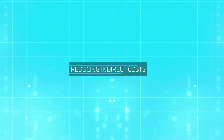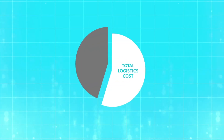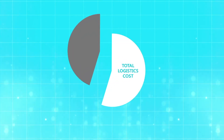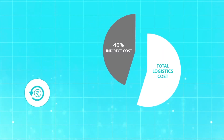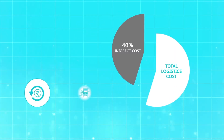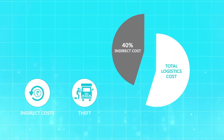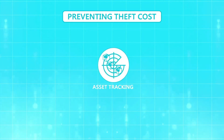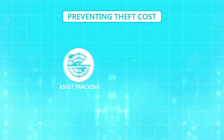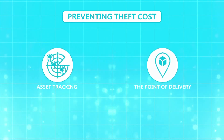Reducing indirect costs: 40% of total cost in the logistics industry is attributed towards indirect costs, which includes theft. To prevent theft cost, asset tracking solutions can be used to track high-value goods individually till the point of delivery.